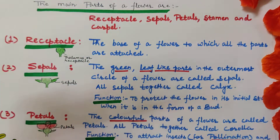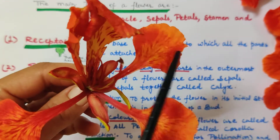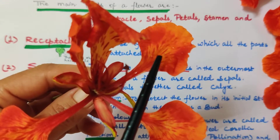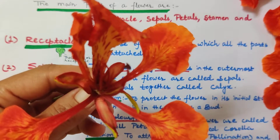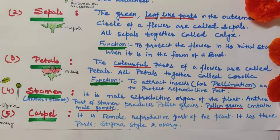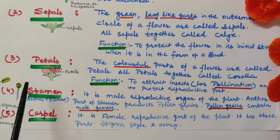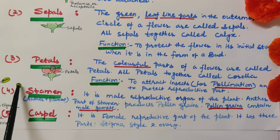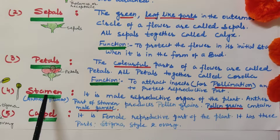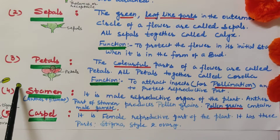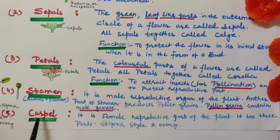The function of petals is to attract insects for pollination. The next part is stamen — anther and filament together form the stamen, which is the male reproductive part of a flower. The anther part of the stamen forms pollen grains, and inside the pollen grains male gametes are present. The function of stamen is to help in the formation of male gametes and pollen grains. The carpel is the female reproductive part, and inside the ovary part of the carpel there is formation of female gametes.